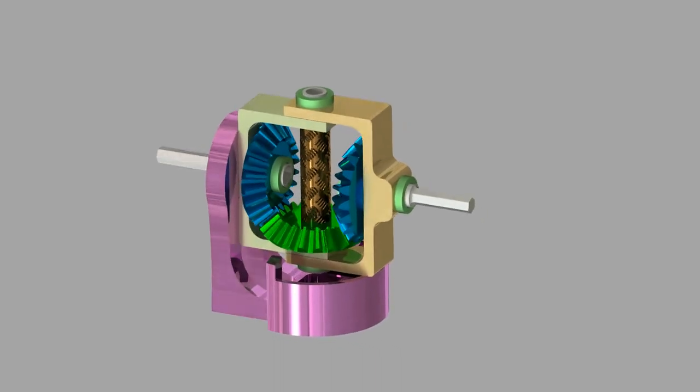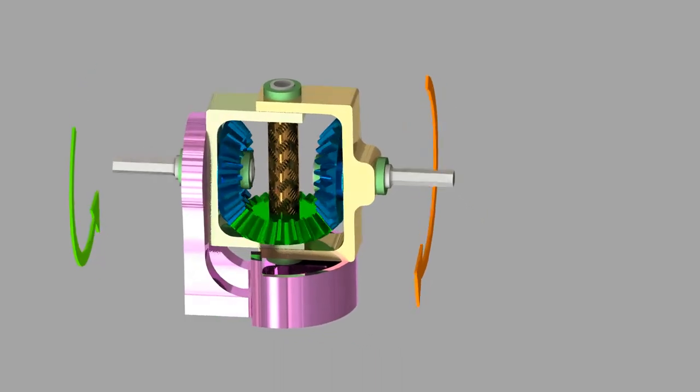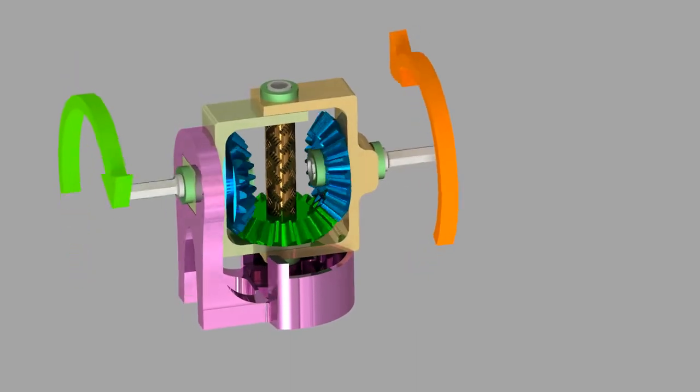This is a bevel gear coupler. Its primary advantage is to reverse the direction of rotation from one shaft to another.